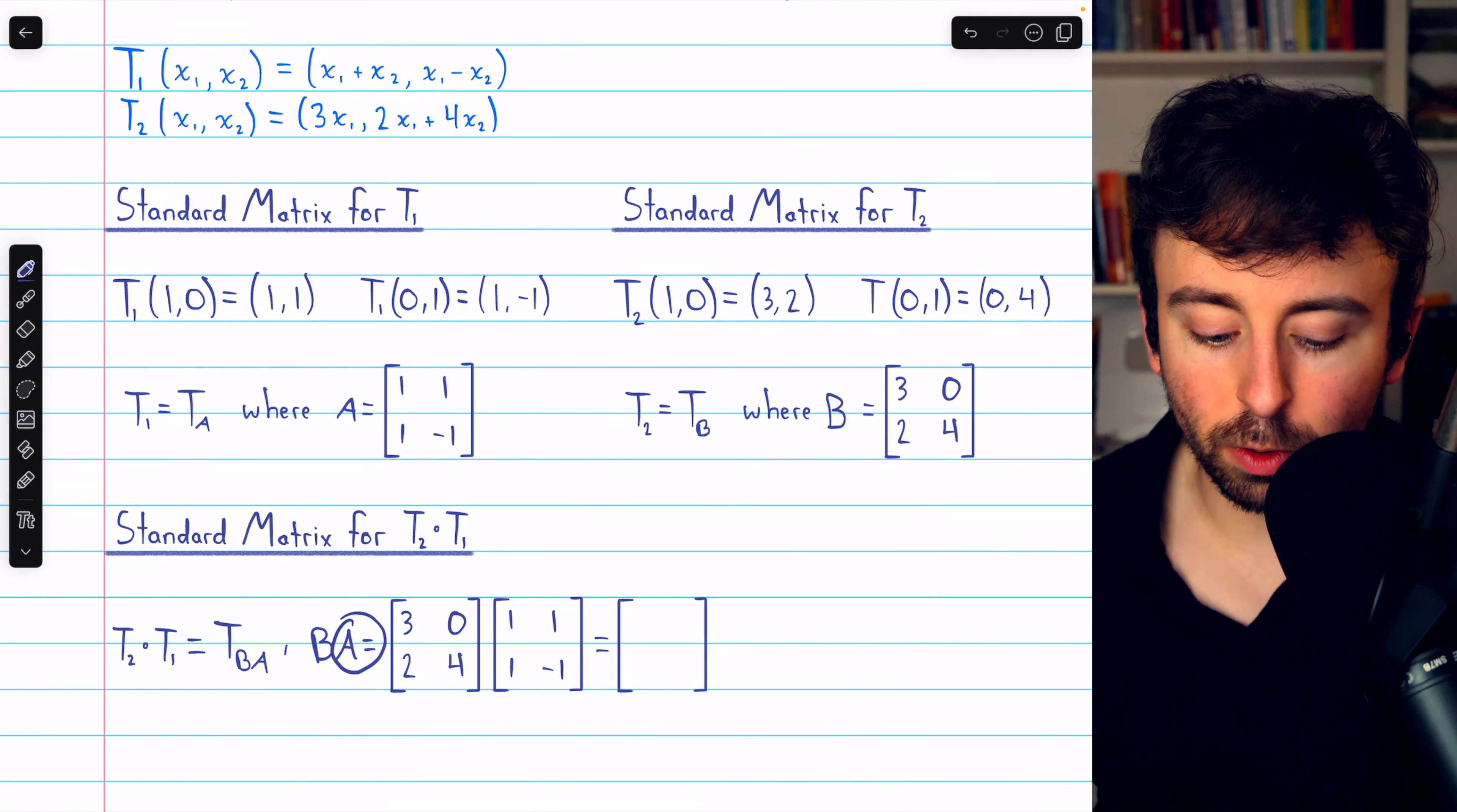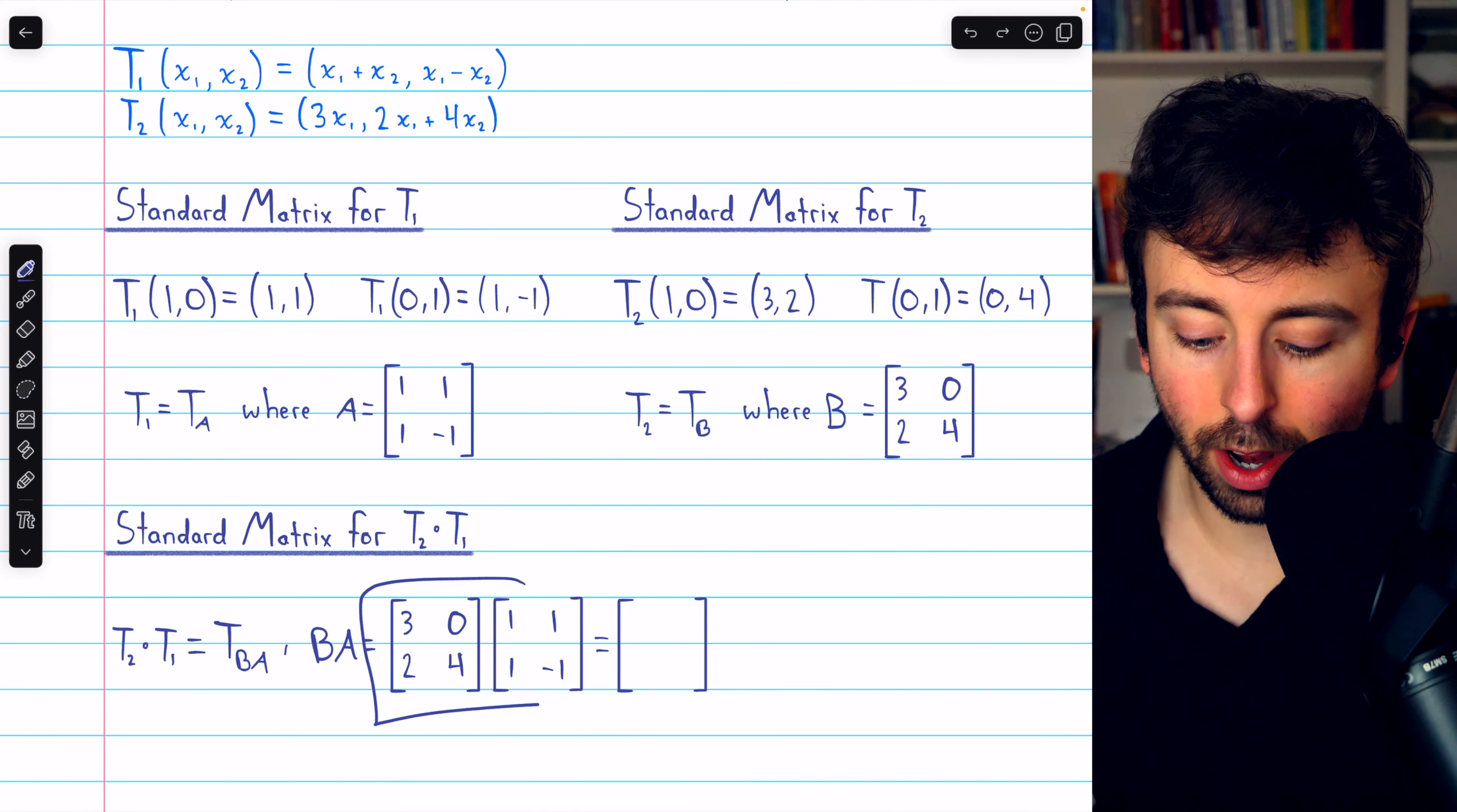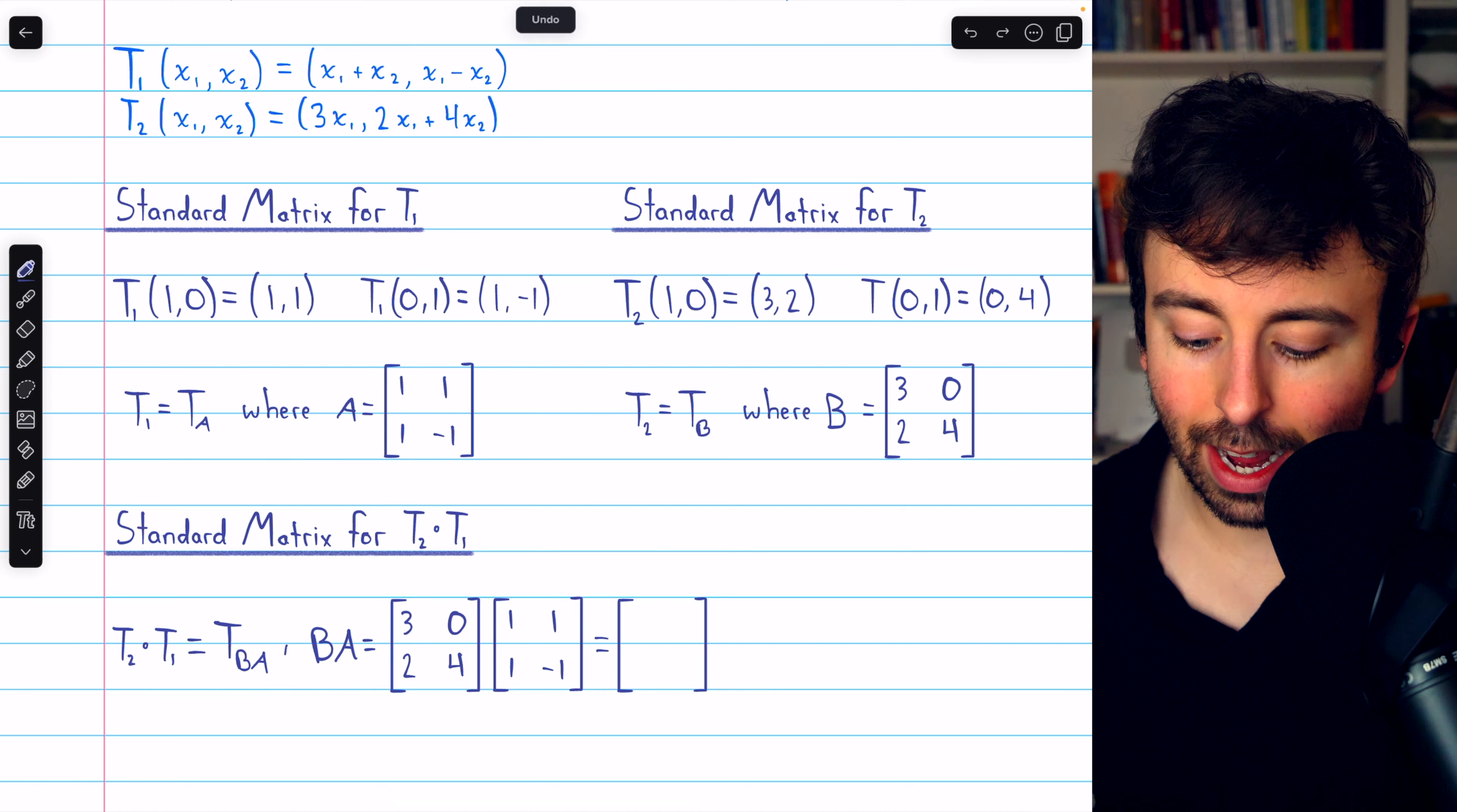the standard matrix we're looking for is the standard matrix of T2, which is B, multiplied by the standard matrix for T1, which is A. And so that is this product here.